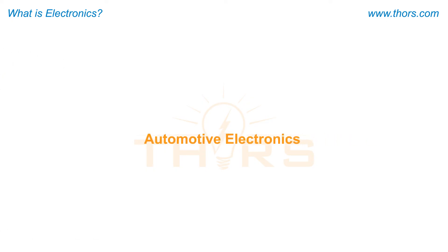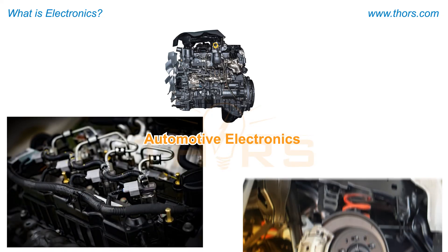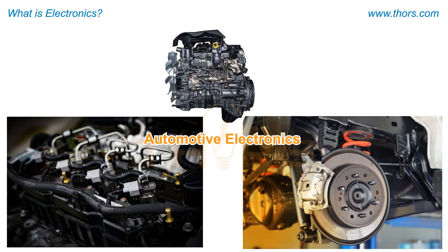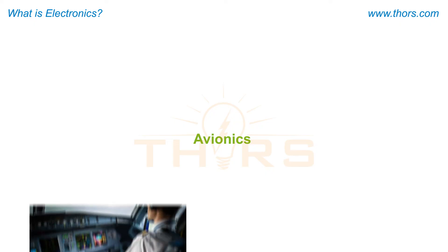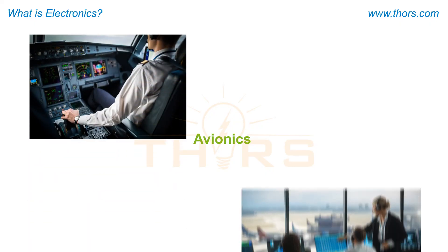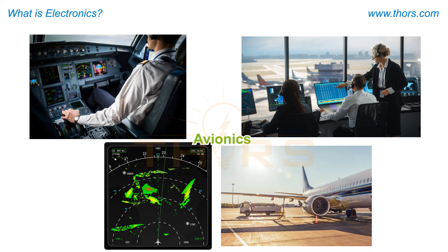Automotive electronics are electronic systems used in automobiles, such as in the engine, fuel system, and braking system. Avionics are the electronic systems used on aircrafts. Avionic systems include navigation, communication, weather radar, and fuel systems.